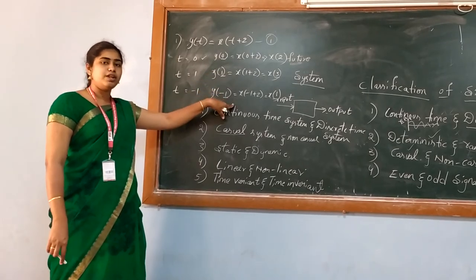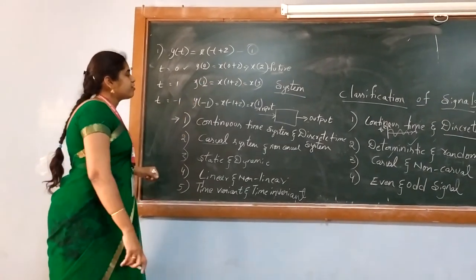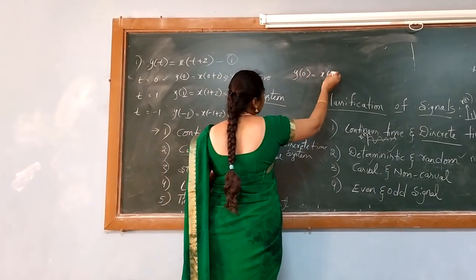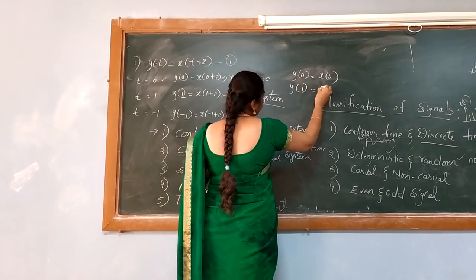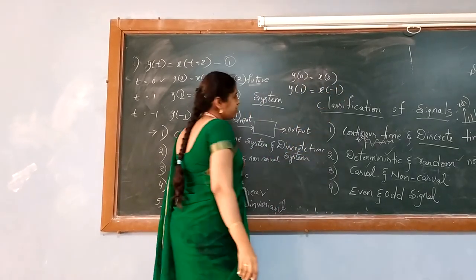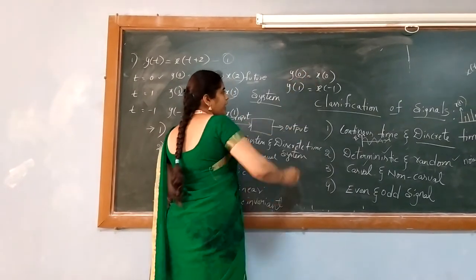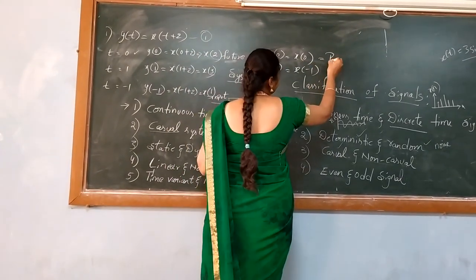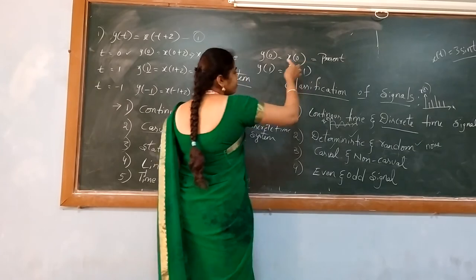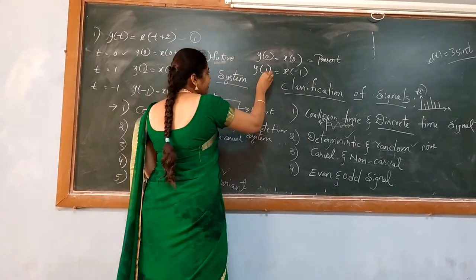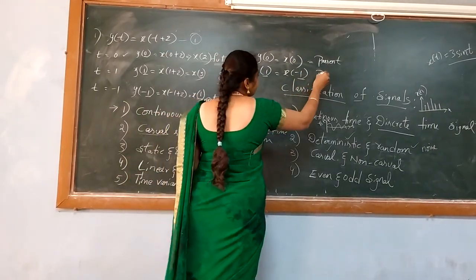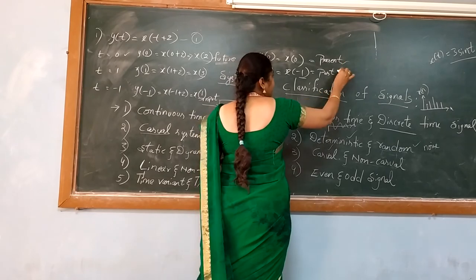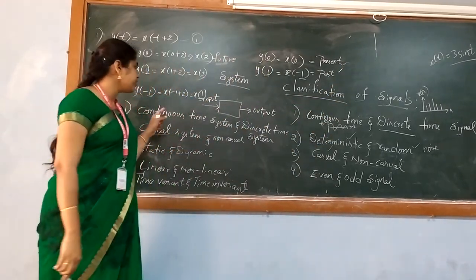Suppose in some other case, by substituting an equation I get the output like x of 0, x of 1, and x of minus 1. Here, when I am substituting 0 I get 0 — this indicates the present value. And x of minus 1 is a past value. Since I have only present and past values, I can say that this is a causal system. The same logic you can apply for static system. The difference is: any system is static if you can prove it depends upon only the present value. If there is any value other than the present, then it is called dynamic.